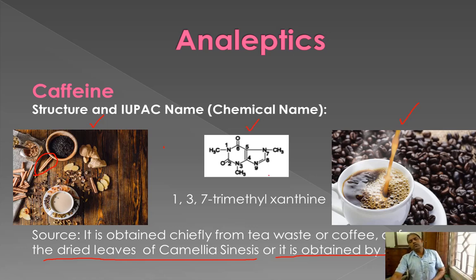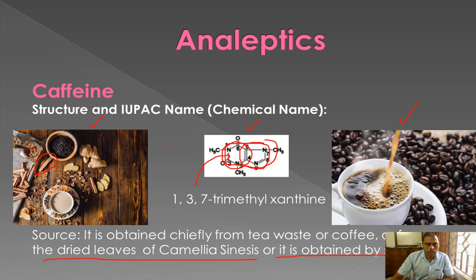Coming to the structure and IUPAC name — caffeine has a purine ring. This purine ring contains a pyrimidine ring and an imidazole ring, each with two nitrogens. When they are joined together, that forms the purine ring. To this purine ring, there are lactone-like structures, and the whole structure with the oxygen and keto groups is called xanthine.